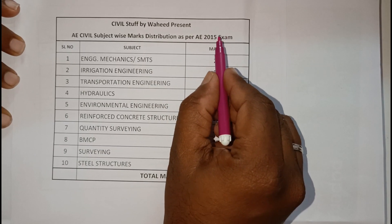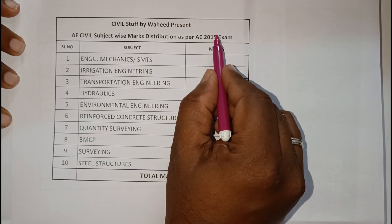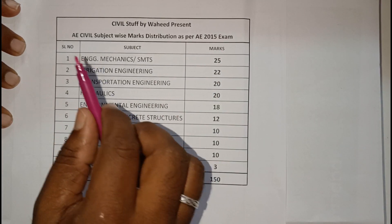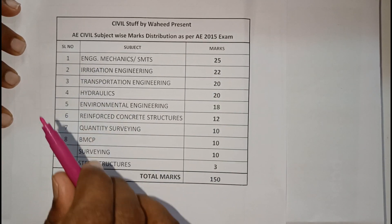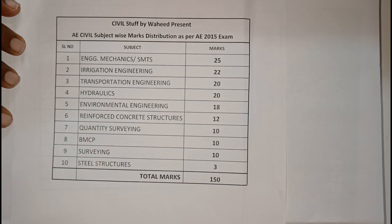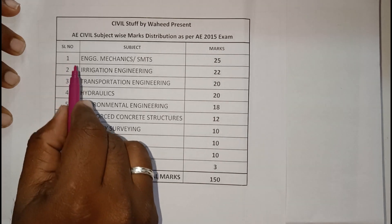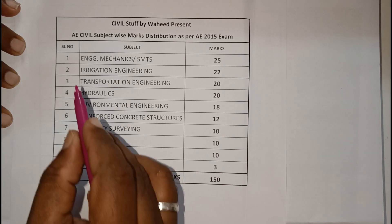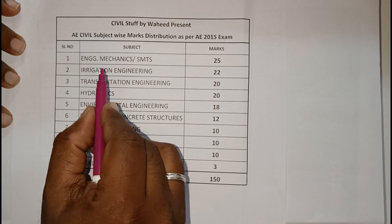Coming to civil subject-wise marks distribution, I have the 2015 exam paper. As you all know, general studies will be 150 questions and 150 marks. Coming to Paper 2, it will be AEE civil engineering, which is purely diploma basics.